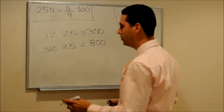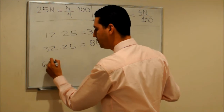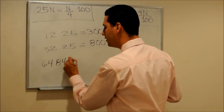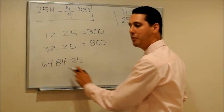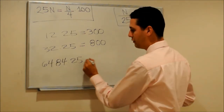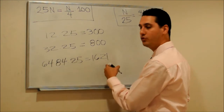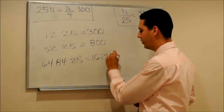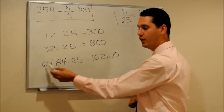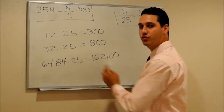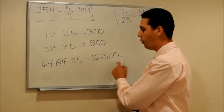Let's multiply 6484 times 25. Let's divide this number by 4. 64 divided by 4 is 16, and 84 divided by 4 is 21. So we have 1621, with two zeros at the end, which means the answer of 6484 times 25 is 162100.